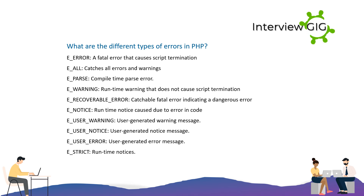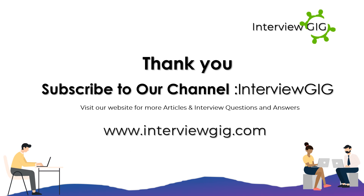What are the different types of errors in PHP? E_ERROR: a fatal error that causes script termination. E_ALL: catches all errors and warnings. E_PARSE: compile-time parse error. E_WARNING: runtime warning that does not cause script termination. E_RECOVERABLE_ERROR: catchable fatal error indicating a dangerous error. E_NOTICE: runtime notice caused due to an error in code.